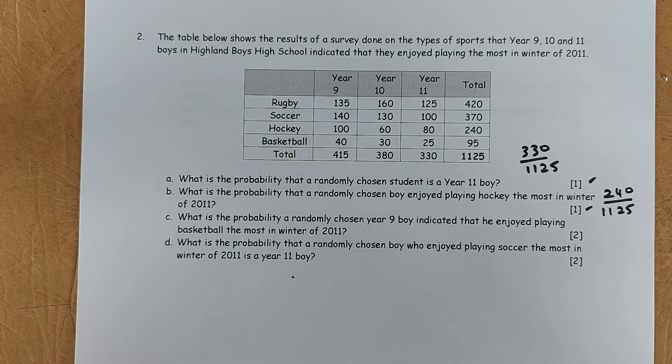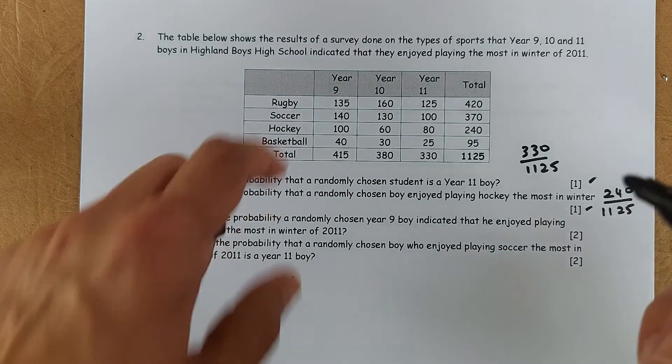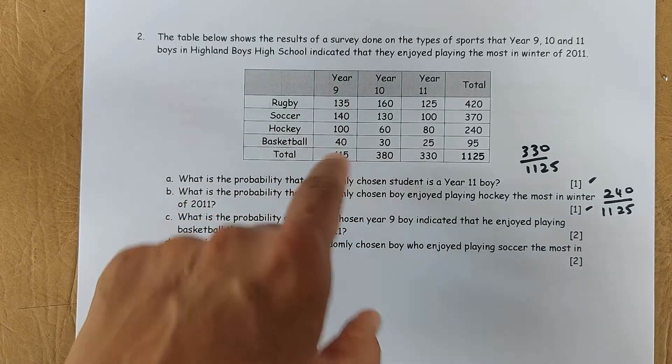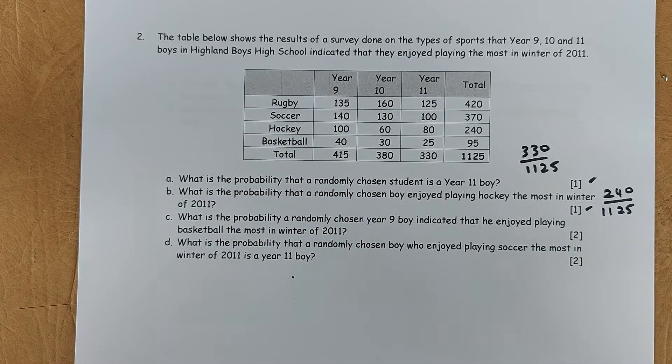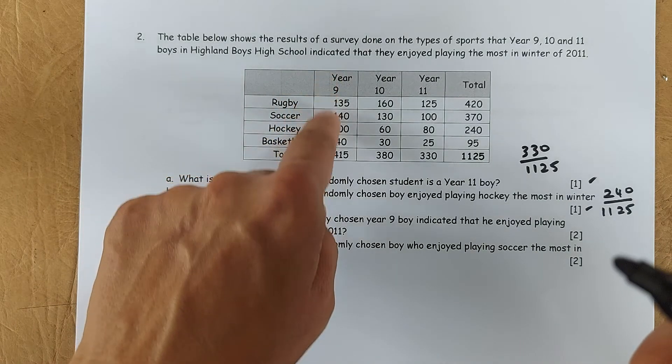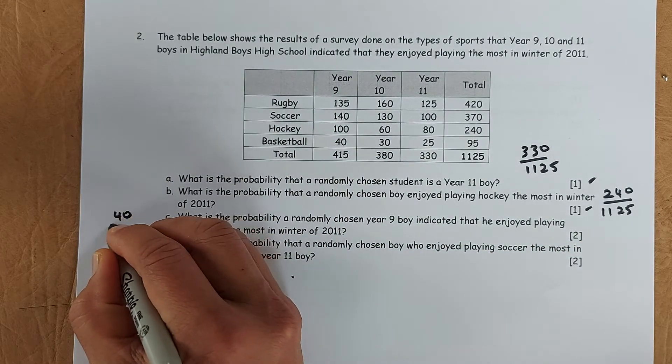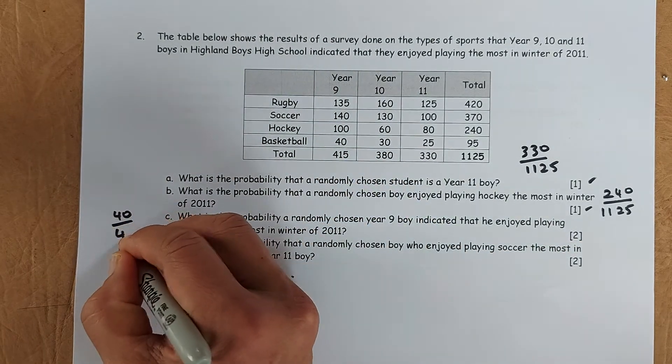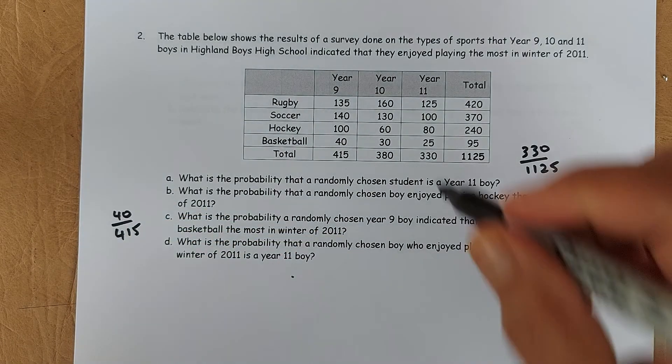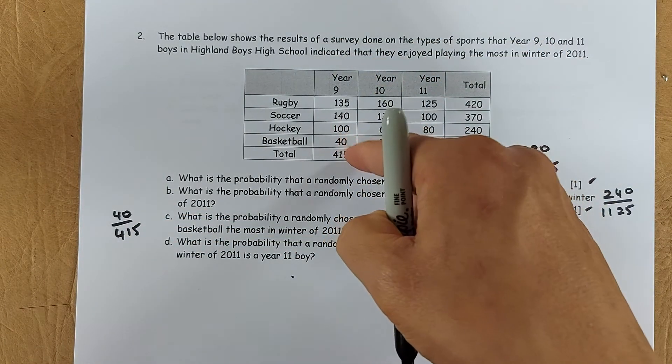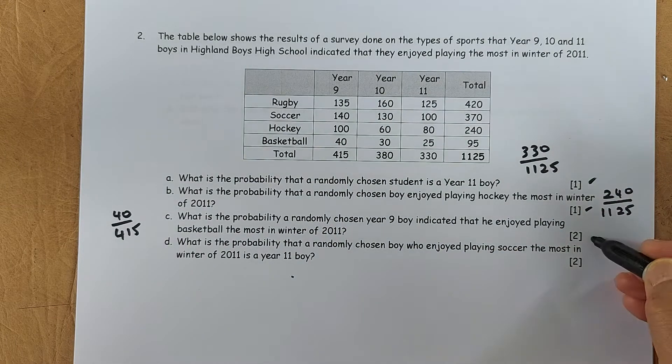The next question is a merit question in level 1. So it's going to be worth 2 marks in the year 9 and year 10. What is the probability that the randomly chosen year 9 boys, so we are only looking at the year 9 boys, so there are 415 of them, indicate they enjoy playing basketball the most in winter of 2011. So we are only looking at year 9. So basketball, there are 40. So the answer is going to be 40 out of 415. Because this is the conditional probability. The condition must be a year 9. So it's going to be 40 out of 415. That will give you 2 marks in the exam.